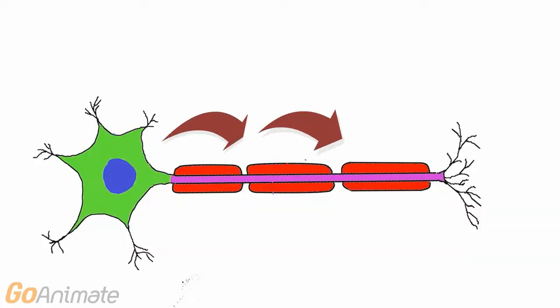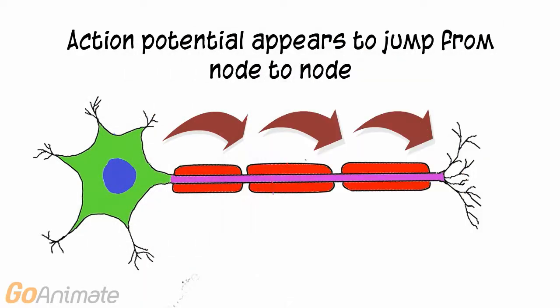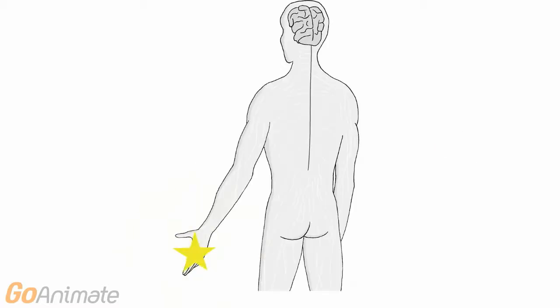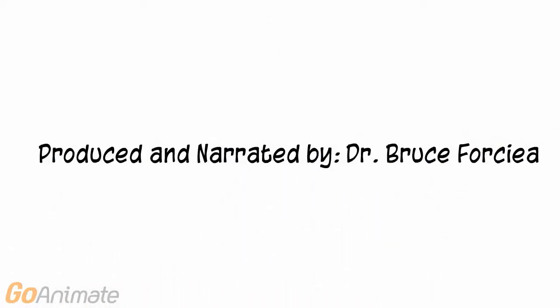If you were to observe this mechanism, it would appear that the action potential jumps from node to node. Myelinated axons conduct action potentials much faster than unmyelinated axons. We hope you've learned something about saltatory conduction.